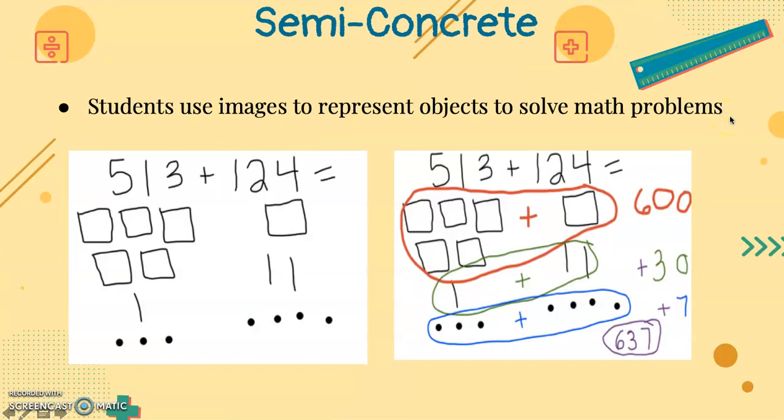Now let's look at the semi-concrete level. At the semi-concrete level, students use images to represent objects to solve problems. Now let's look at the sample. For example, the problem is 513 plus 124.